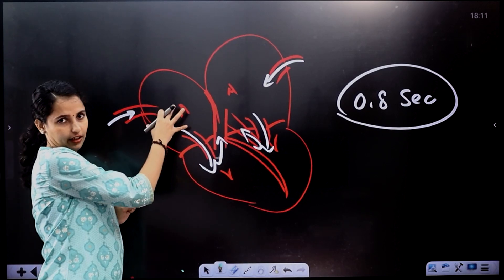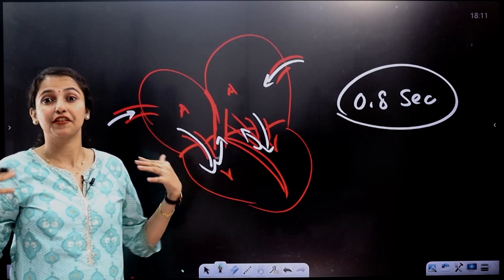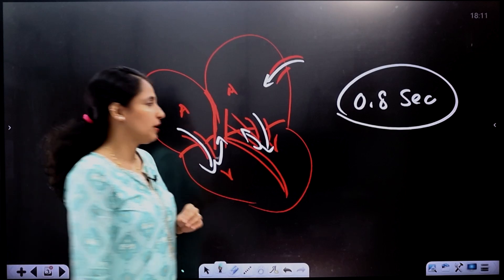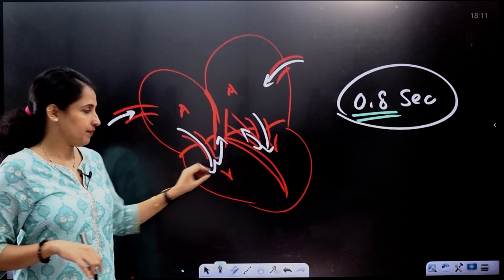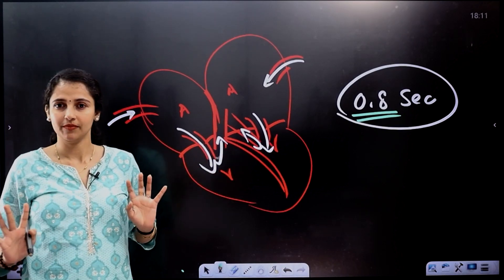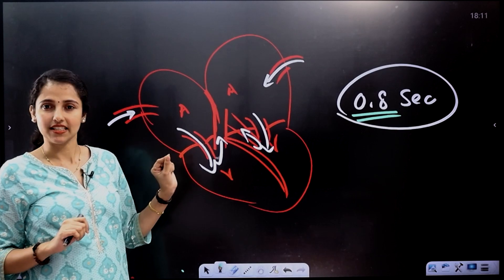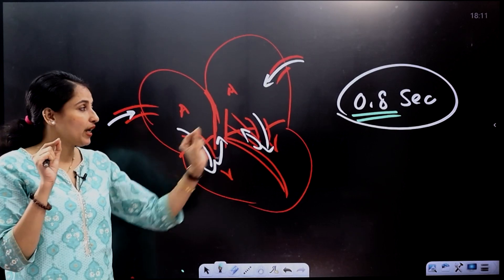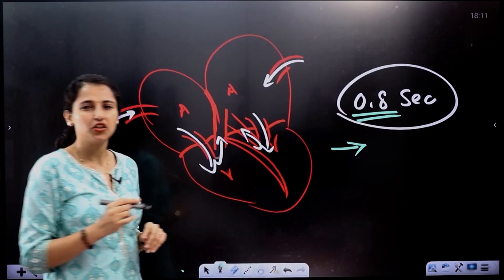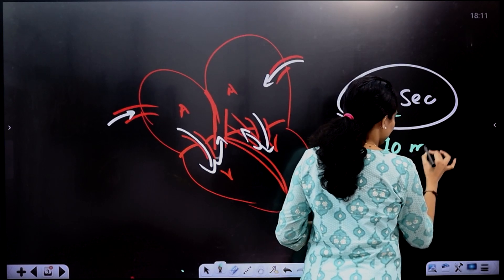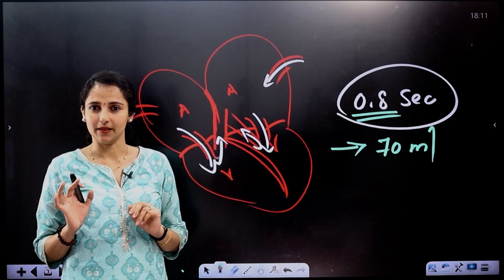In the heart, take blood to the ventricle. When you contract it, blood is pumped out. The time for one cardiac cycle is just 0.8 seconds. In this 0.8 seconds, we are pumping blood from two ventricles. The right ventricle and left ventricle pump blood in one cardiac cycle — approximately 70 ml of blood per single cardiac cycle in 0.8 seconds.